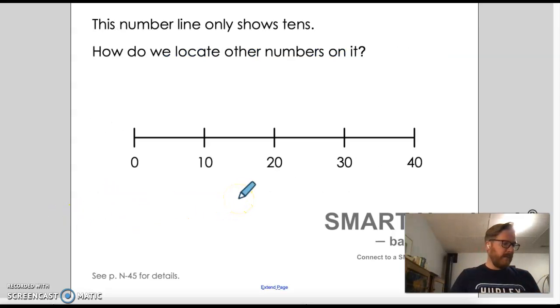The last thing that we're going to kind of talk about before I ask you to finish up the stuff, is that this number line here only shows tens. And so the question is, how do we locate other numbers on it? Well, here, what you can do is you can actually just add in. So that would be five and that would be 15 and that would be 25 and that would be 35. And then if you wanted other numbers, then that would be like one, two, three, four, five, six, seven, eight, nine, 10. And you can kind of do that all the way along and add in those extra marks. So you get a really accurate grid.